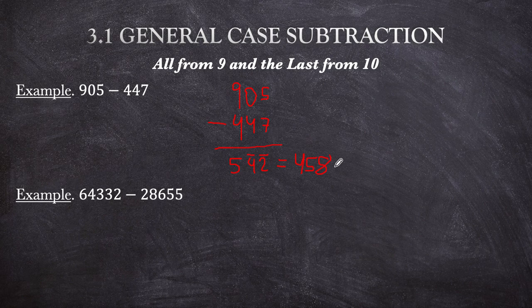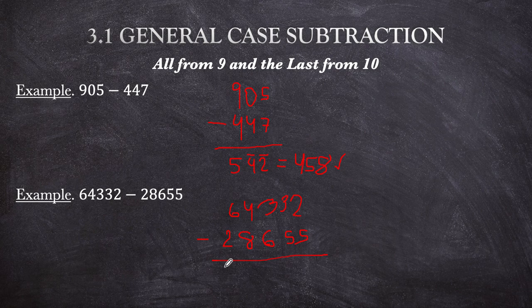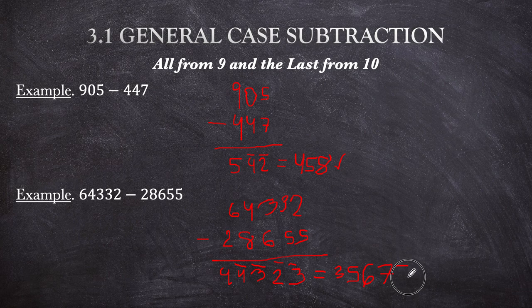Number 2: 64,332 minus 28,655. Digit by digit: 6 minus 2 is 4; 4 minus 8 is bar 4; 3 minus 6 is bar 3; 3 minus 5 is bar 2; 2 minus 5 is bar 3. Converting to ordinary: subtract 1 to get 3, then 'all from 9' gives 5, 6, 7, and 'last from 10' gives 7. Answer: 35,677.